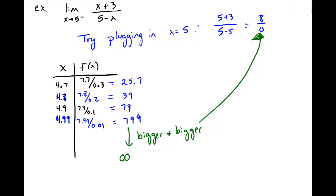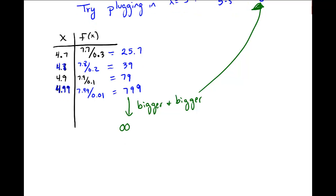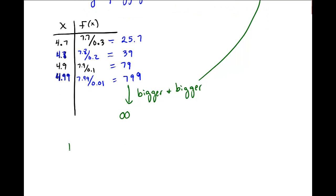And in this context we say that this is going to positive infinity. So we write in this case that the limit as x approaches 5 from the left of x plus 3 over 5 minus x is equal to positive infinity.